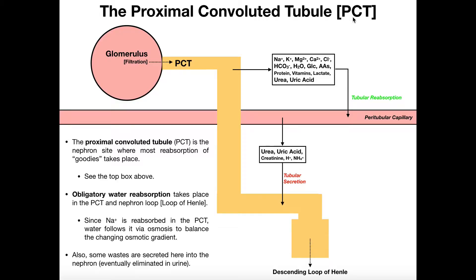In this video, we're going to continue with the urinary system, and we're going to talk about the events that go on in the proximal convoluted tubule or PCT of the nephron. The overall function of the urinary system is to get rid of waste from the blood, to get rid of excess water if we have a fluid volume that's too high, which is involved in regulation of blood pressure as well. And if there's anything in excess, the kidneys need to get rid of that.